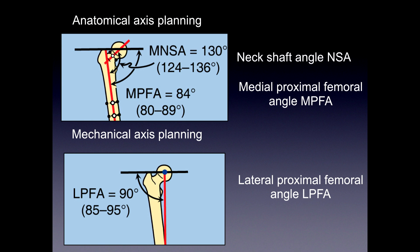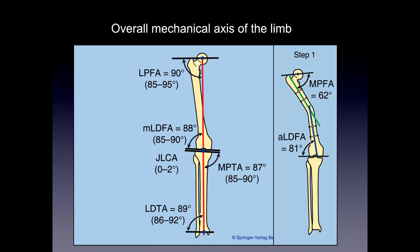We did anatomical axis planning looking at the head-neck center, giving us a medial proximal femoral angle and the neck-shaft lines giving a medial neck-shaft angle of 130 degrees — approximately normal. Also mechanical axis planning with a lateral proximal femoral angle. We need to consider what happens in the rest of the limb lower down, because often it's the mechanical axis you're trying to correct and realign. A shaft deformity in the tibial or femur can result in malorientation of the joints above and below, with or without a secondary hidden or compensatory deformity. So consider the whole limb, not just the proximal femur.